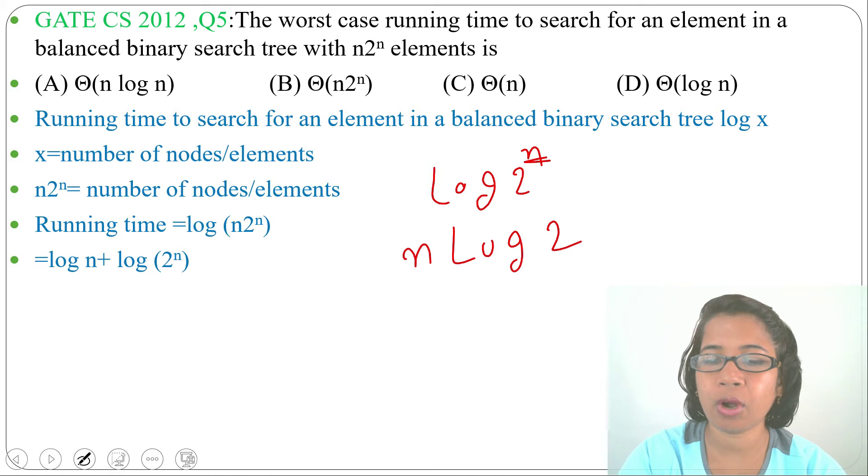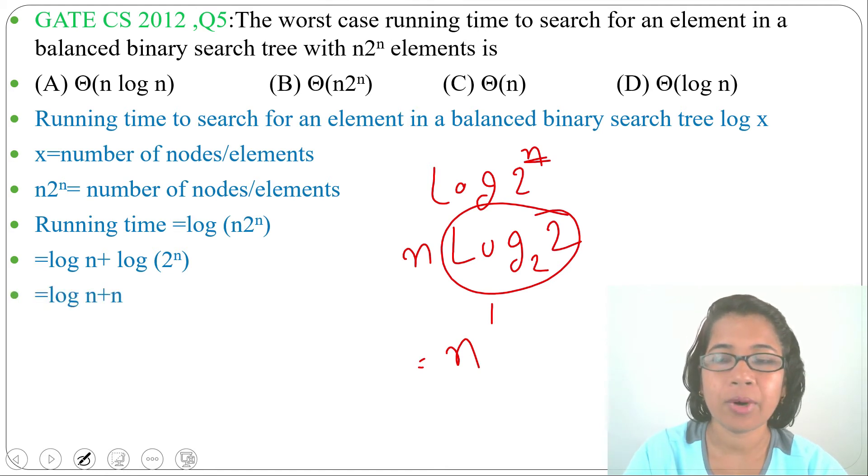And we know log base 2 of 2, this value is 1, so it will be simply n×log(n) + n. Now what will be the running time? Running time will be maximum from these two, so maximum value is n.